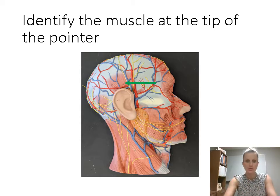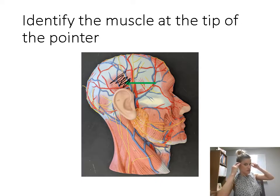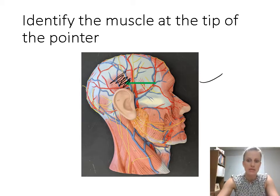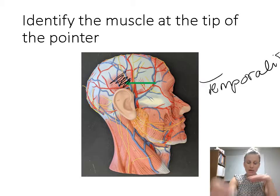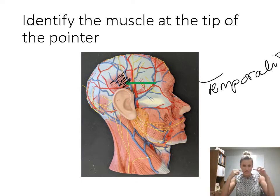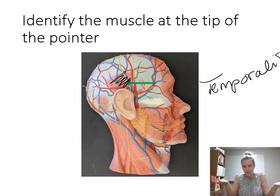This is pointing to a muscle of the scalp, right in the region above the ear. Remember that bone there is called the temporal bone, and this region is the temporal region. So it makes sense that this muscle is the temporalis. There are a few different muscles we need to know in the head or on the scalp, and they're all named based off of the region they're in or the bone that's under them — like frontalis, temporalis, occipitalis.